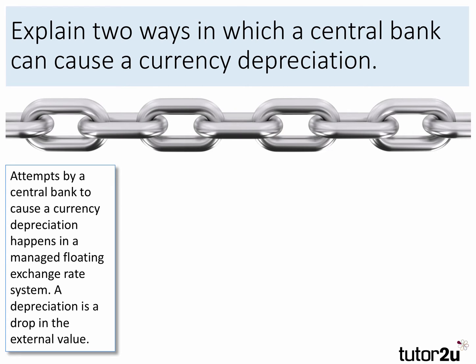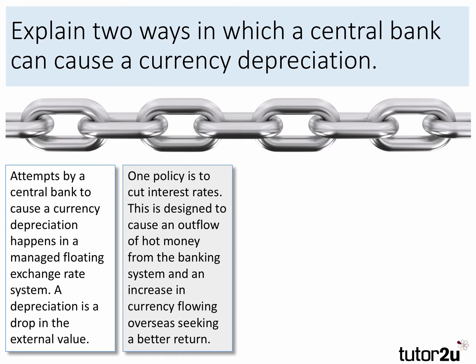Now we build our chain. One policy is to cut interest rates. This is designed to cause an outflow of hot money from the banking system and an increase in currency flowing overseas seeking a better return — explaining how low interest rates could cause an outflow of hot money.